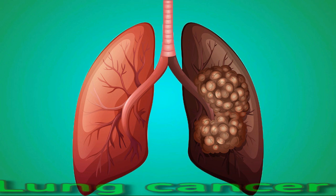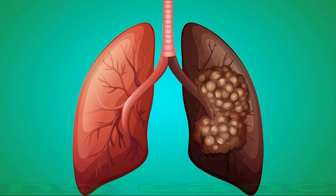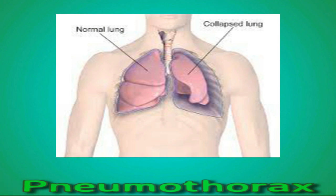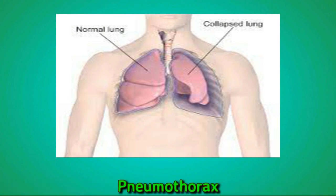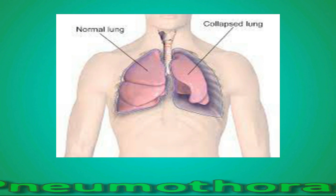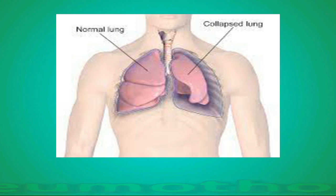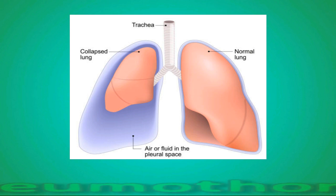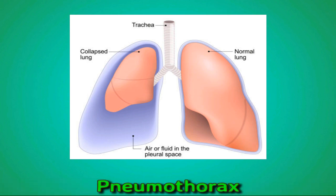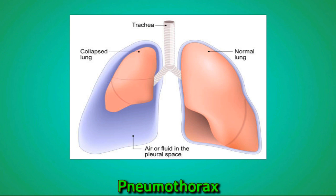Pneumothorax is when a portion or all of a lung collapses. This can cause sudden and significant chest pain on the affected side of the chest. A pneumothorax can occur suddenly or after an injury or illness.